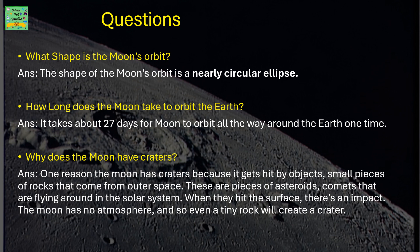It takes around 27 days, that is about a month, for the moon to orbit all the way around the Earth one time.